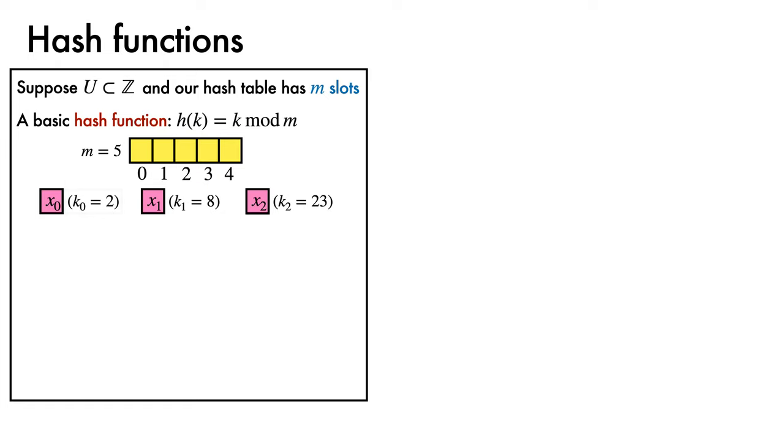2 modulo 5 is 2, so x0 is mapped to slot 2. 8 modulo 5 is 3, so x1 is mapped to slot 3. 23 modulo 5 is also 3, so x2 also maps to slot 3. Uh oh, we had a collision. This is bad news.